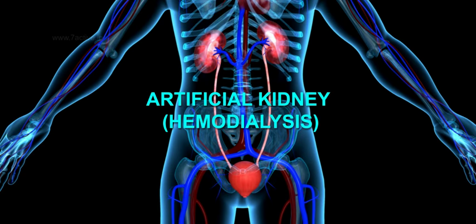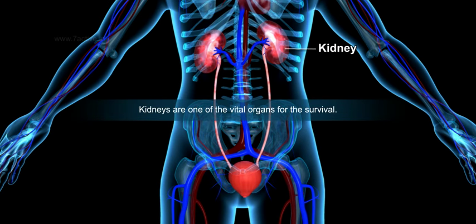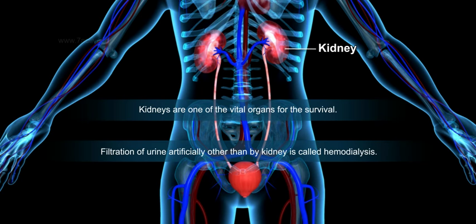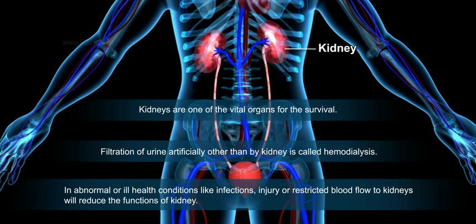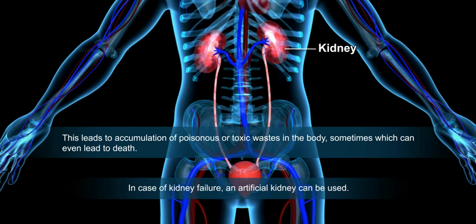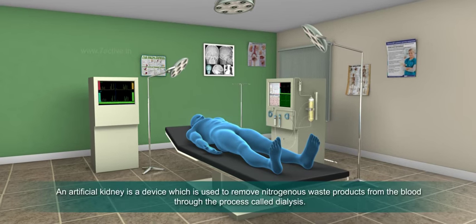Artificial kidney and hemodialysis: kidneys are one of the vital organs for survival, responsible for filtration. The process of filtration of urine artificially, other than by the kidney, is called hemodialysis. In abnormal or ill health conditions like infections, injury, or restricted blood flow, kidneys will reduce their functions, leading to accumulation of poisonous or toxic wastes in the body, which can even lead to death. In case of kidney failure, an artificial kidney can be used.